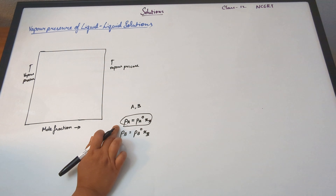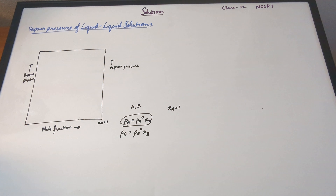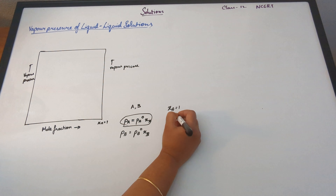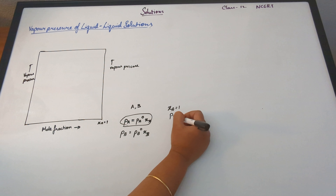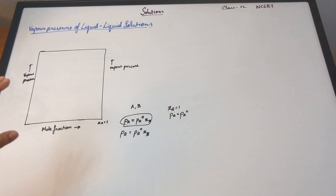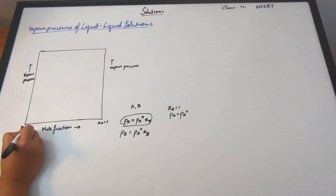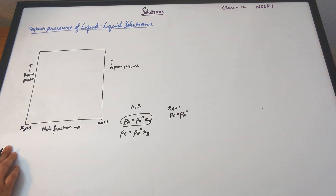Now let's look at this box that I've drawn here. On the x-axis, you have mole fraction, and on the y-axis, you have vapor pressure. It's the same on both graphs — this y-axis is also going to be vapor pressure.